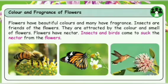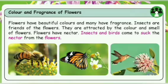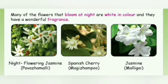Let's see the colors and fragrances of flowers. Flowers usually have beautiful colors and wonderful fragrances. We call insects the friends of flowers as they are attracted by the color and smell of flowers. Flowers have nectar where insects and birds come to suck — that is, to take the nectar from the flowers. Most plants that bloom during the night time are white in color and have a wonderful fragrance.